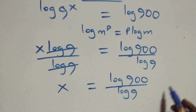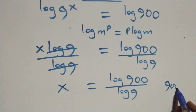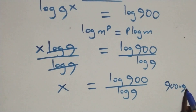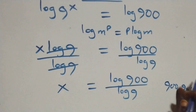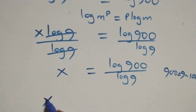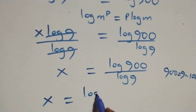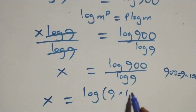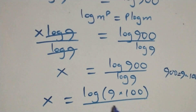That is, here we can express 900 as 9 times 100. What we have here will be written as x equals to log(9 times 100) over log 9.